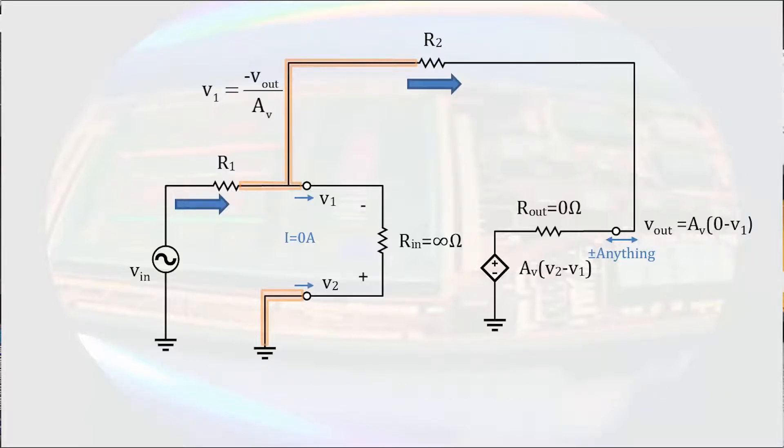The current through R1 enters the node and is equal to the input voltage minus the negative output voltage divided by the open-loop gain, all divided by R1. The current that leaves the node is negative Vout over the open-loop gain minus the output voltage divided by R2.